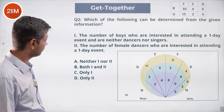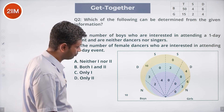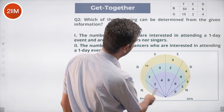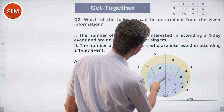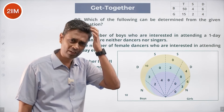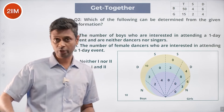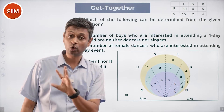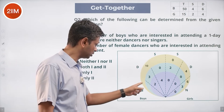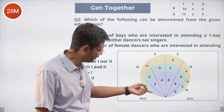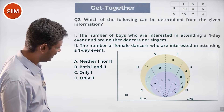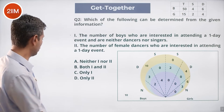Which of the following can be determined? The number of boys interested in a one-day event who are neither dancers nor singers: there are 5 dancers accounted for and 1 dancer remaining among boys — that missing dancer could be in one-day-only or outside the events entirely. So we cannot determine this. Statement 1 cannot be answered. The number of female dancers interested in attending a one-day event can be answered — that's determinable. So only statement 2 can be answered.